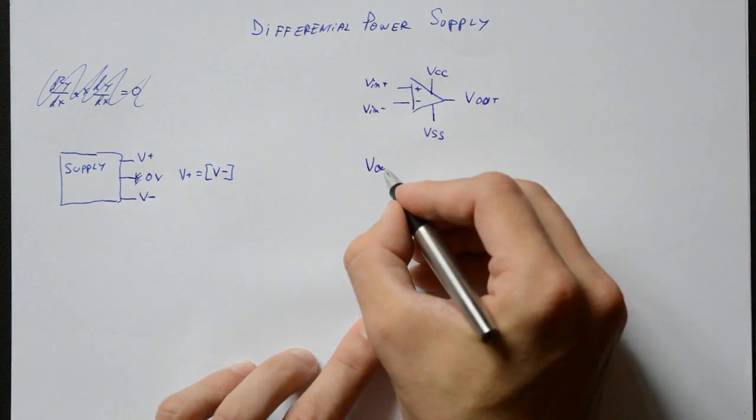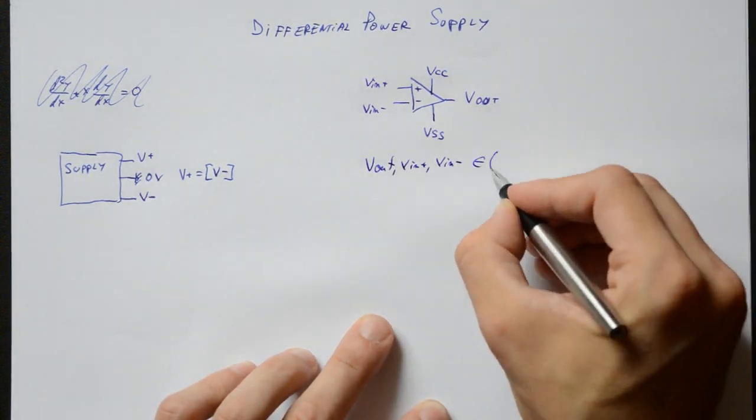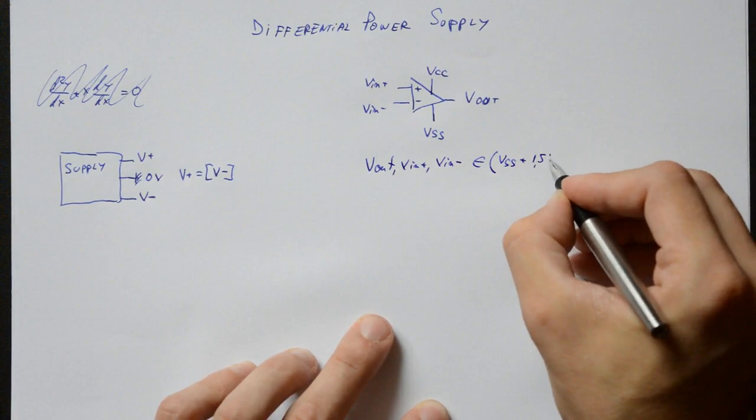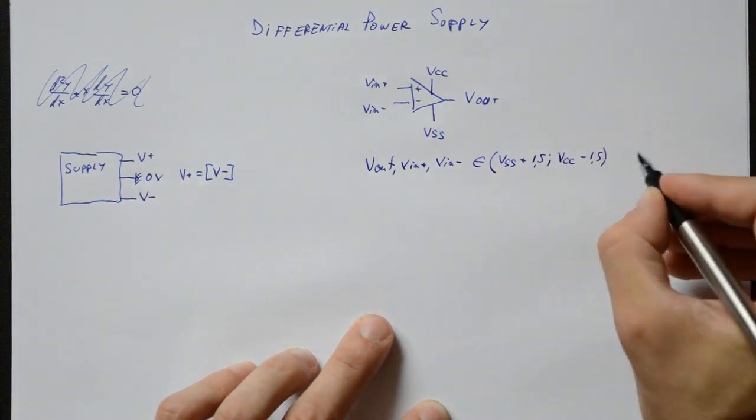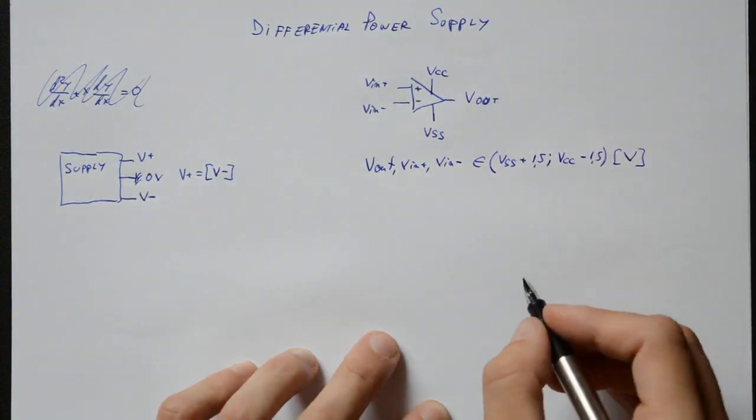First, input and output stages of most op-amps are far from rail to rail. That means that the usable voltages are somewhere around 1-2 volts away from the supply rails, both on inputs and outputs.